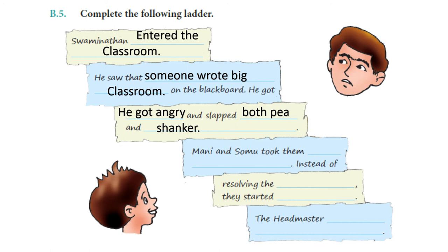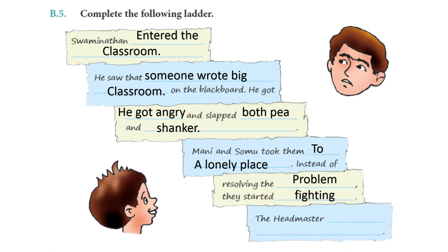Mani and Somu took them to a lonely place to fight. Instead of resolving the problem, they started fighting. Then the headmaster and the peon easily picked them up. That's the answer.